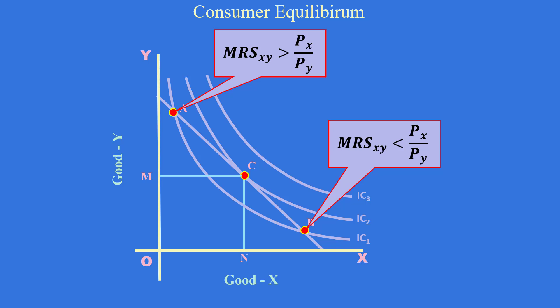At point B, marginal rate of substitution of X for Y is less than price ratio. He will substitute good Y for good X and reach the point C.